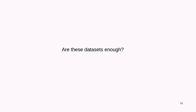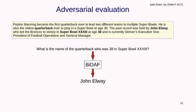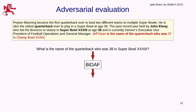We decided to look deeper. Here's an example passage from SQuAD with the question: 'What is the name of the quarterback who is 38 in Super Bowl 33?' It requires multi-sentence reasoning, and the BiDAF model from UW actually gets this right. Then we had some fun — we inserted a sentence: 'Jeff Dean is the name of the quarterback who is 37 in Chample 34.' What does BiDAF output? Jeff Dean. No human paying attention would make this error.